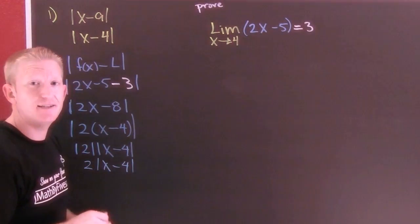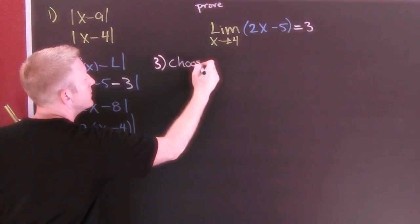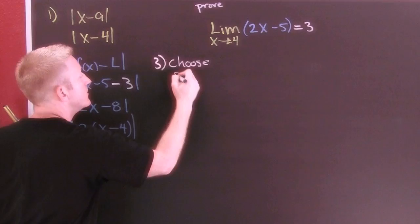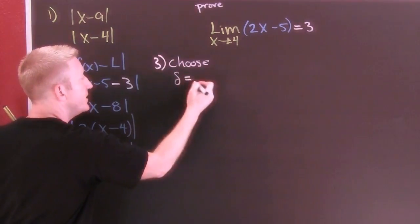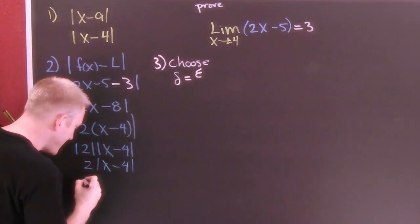Now that gets us our c, and what does that get us? It gets us part 3, and in part 3 we're going to choose delta to be equal to epsilon over that c right there - 2.